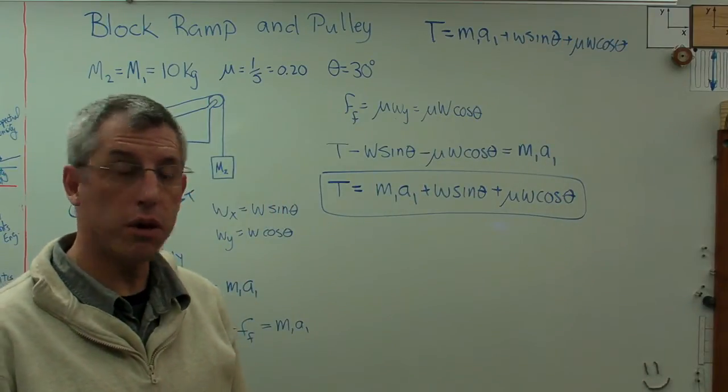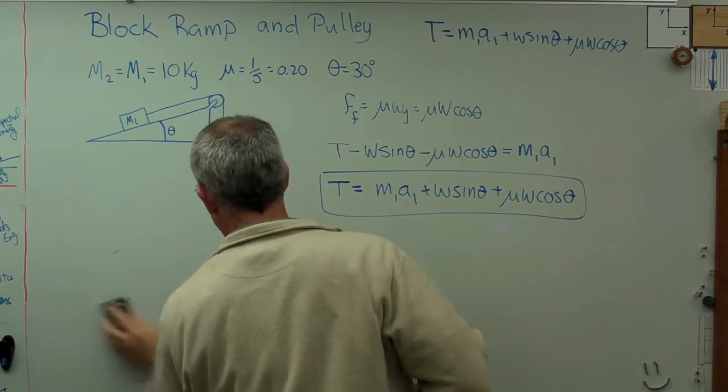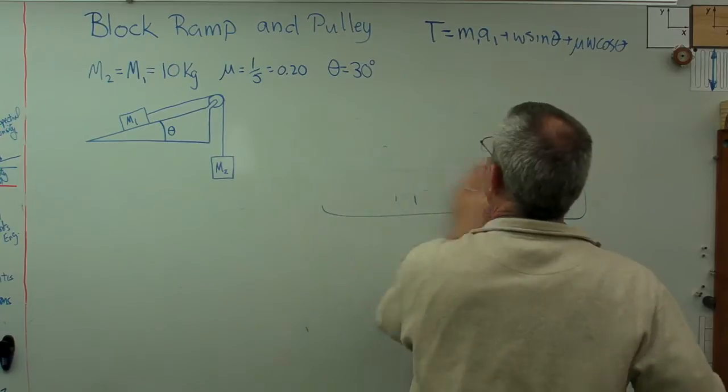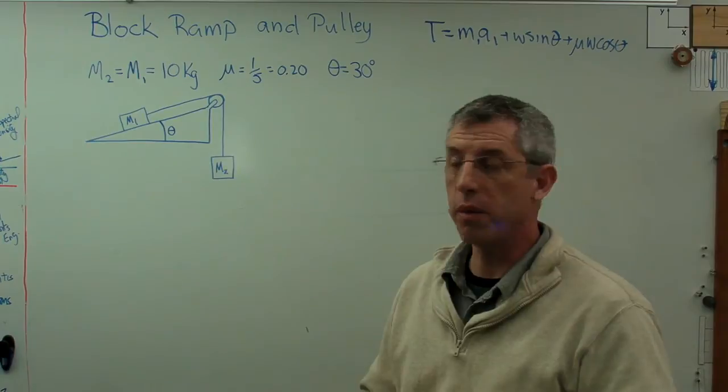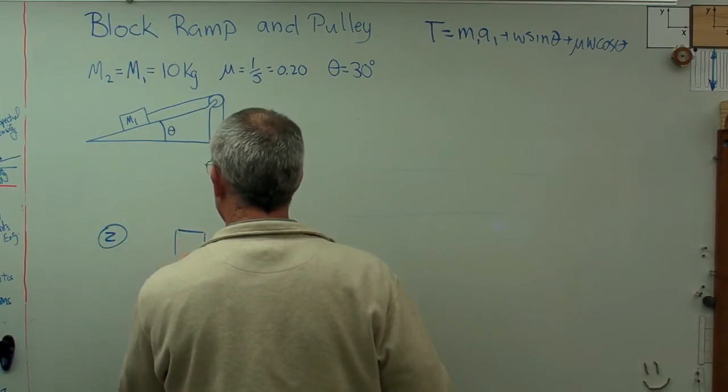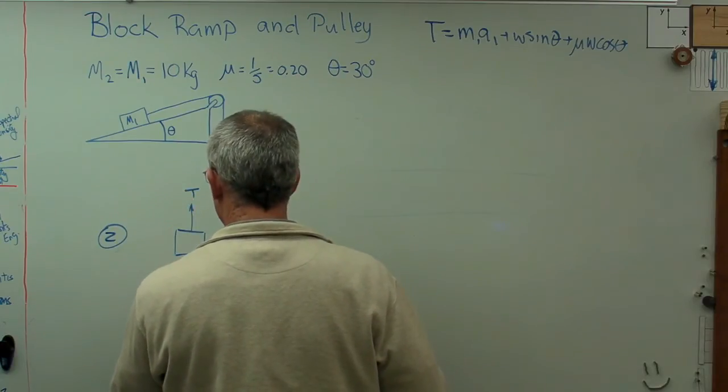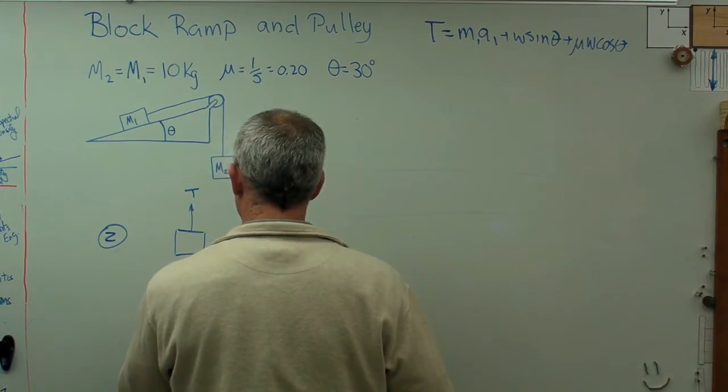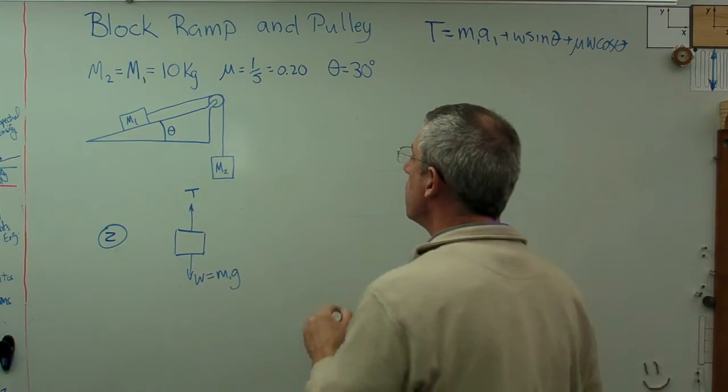Now let's write the equation of motion for the second block. For the second block, this is a little simpler because it's just hanging in space. For block number two, tension goes up like that, weight goes down like that, and that's just equal to m1 g. That's it. There's nothing more to it than that.